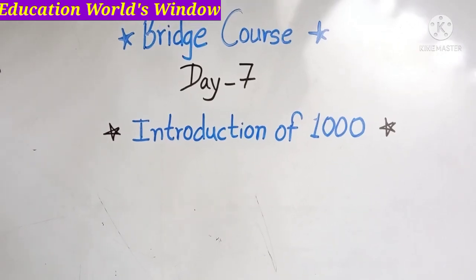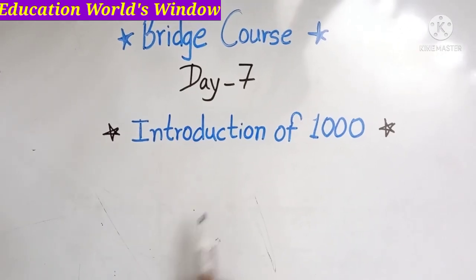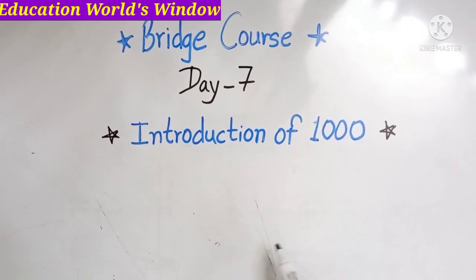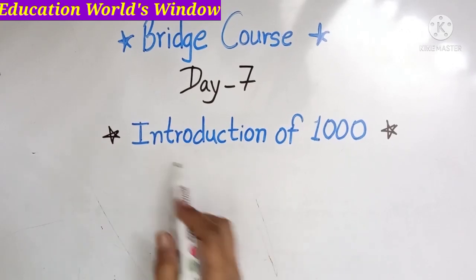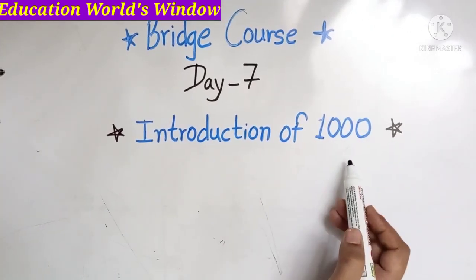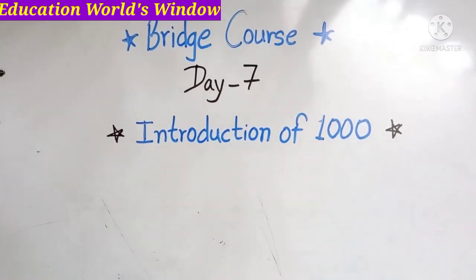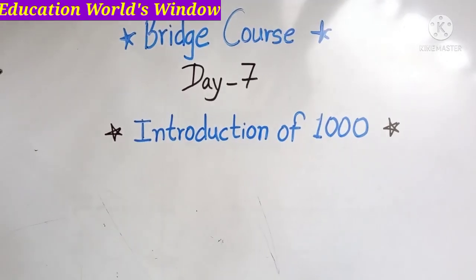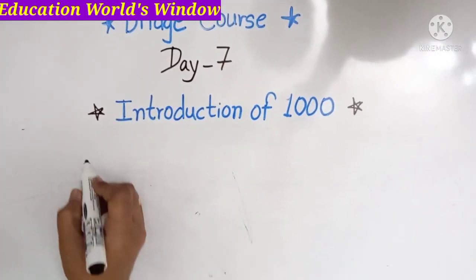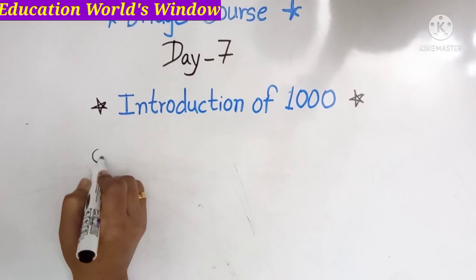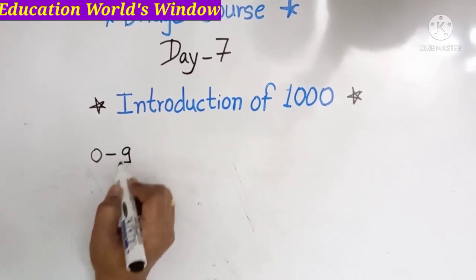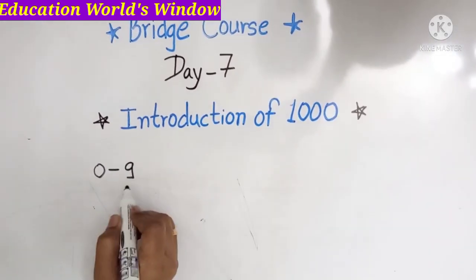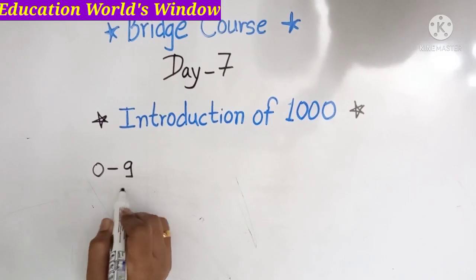Hello friends, welcome on the seventh day of the bridge course. Today we are going to revise the topic: introduction of numbers. From 0 to 9, these are all one-digit numbers. 9 is the biggest one-digit number.